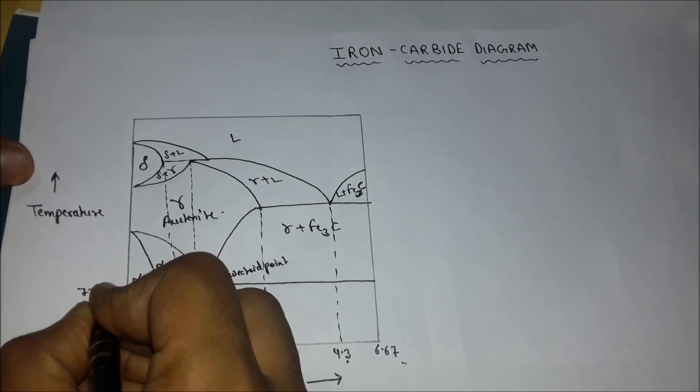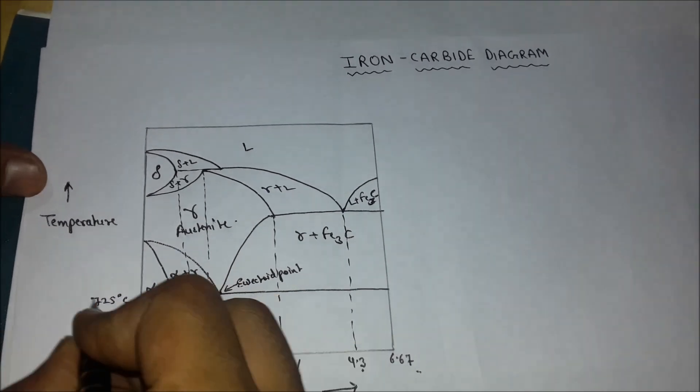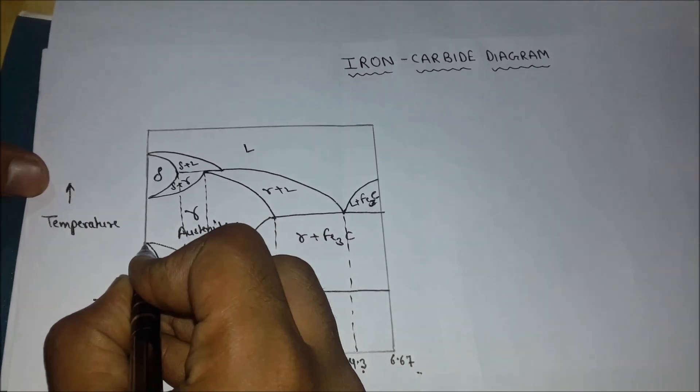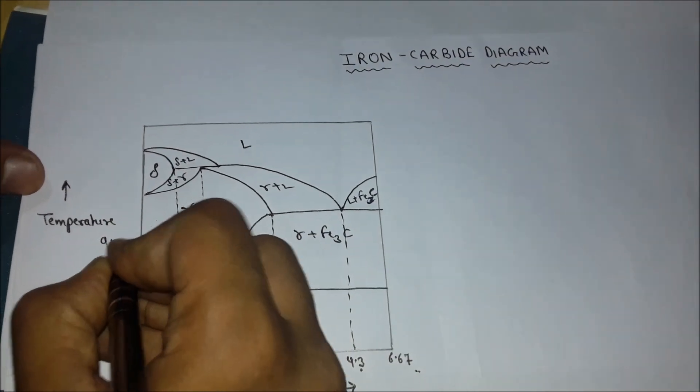Now we will write the temperatures. This is 725 degrees Celsius. This is also known as the lower critical temperature.